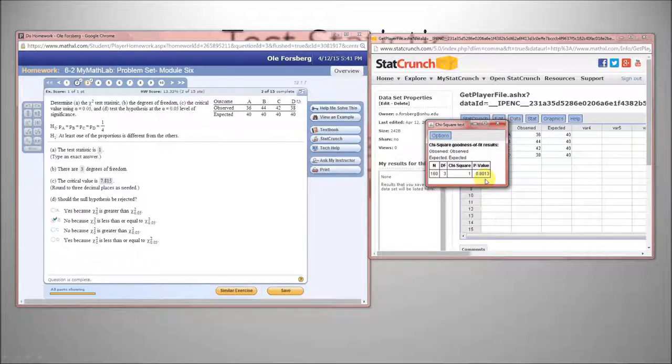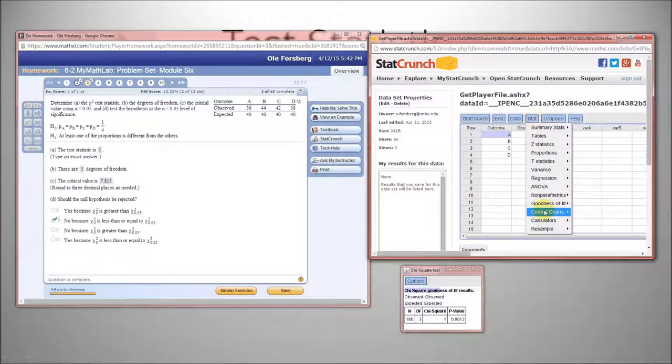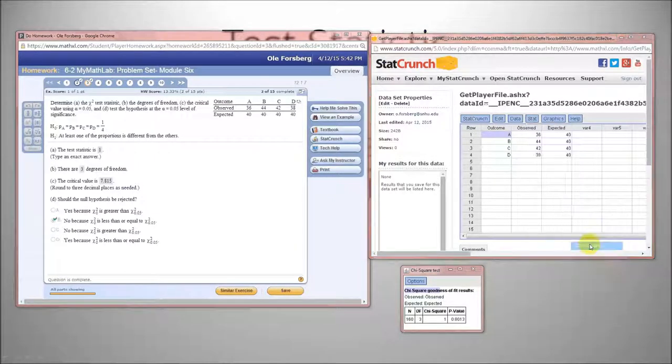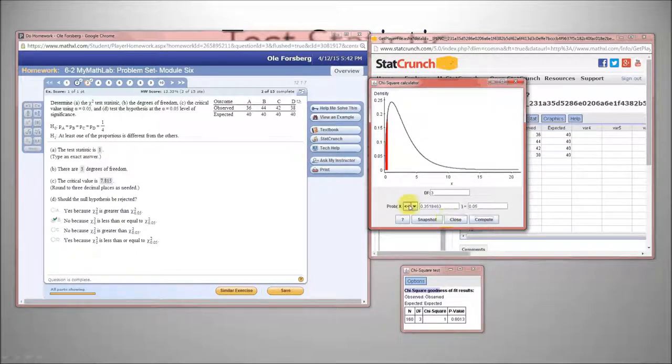Now, notice this will not be helpful specifically for this question. For this question, we're asked to calculate the critical or determine the critical value. This does not give you the critical value. The only way that you can get the critical value from StatCrunch is through Stat, Calculators, Chi-squared, specified degrees of freedom, 0.05, compute. Oops, sorry. Change the direction. 0.05, compute.